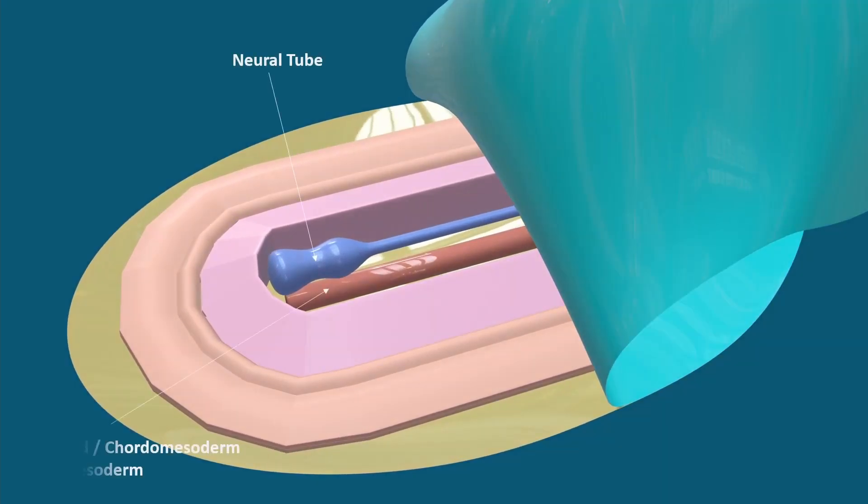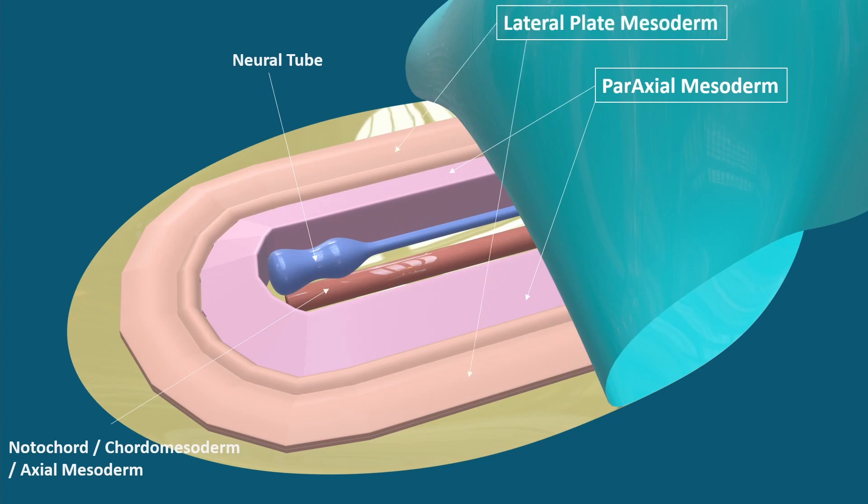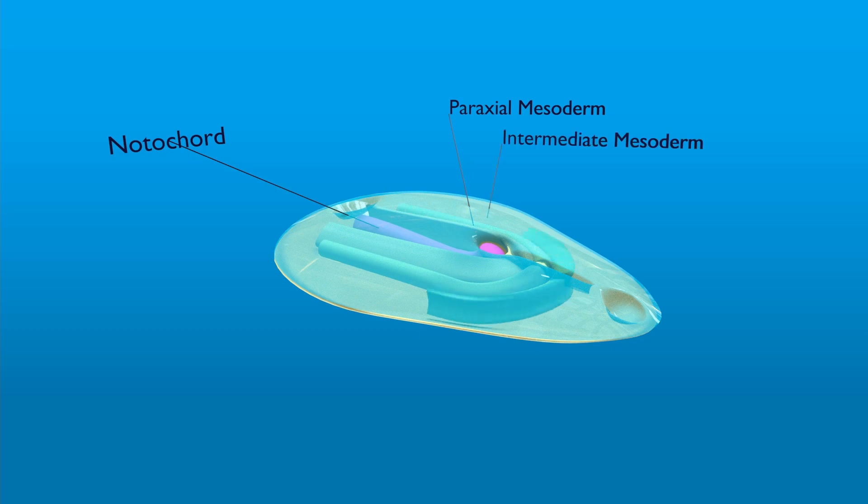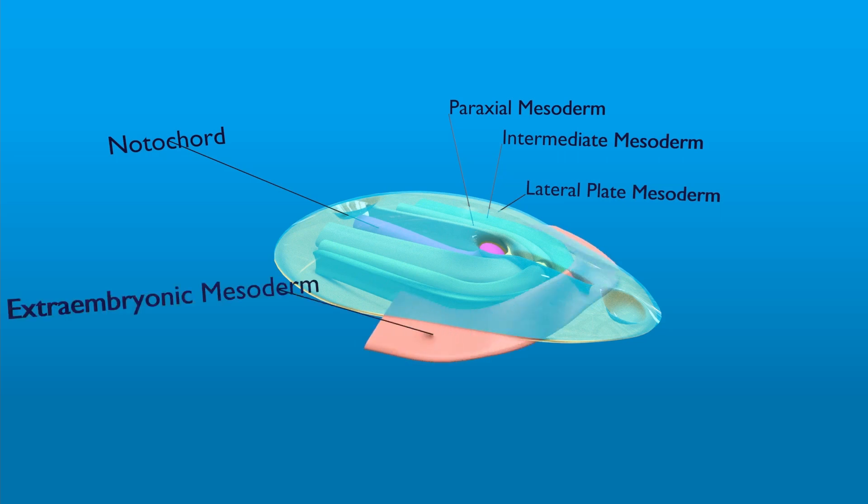At the mid axis of the embryo is the axial mesoderm also called notochord. The part of mesoderm that runs just parallel and lateral to this axial mesoderm is called paraxial mesoderm. The most lateral one is the lateral plate mesoderm and in between the lateral plate and paraxial mesoderm is the intermediate mesoderm. Cells that ingress from the Henson's node form the precordal plate and notochord. Cells that ingress from the cranial end of primitive streak form the paraxial mesoderm. Cells from the mid streak form the intermediate mesoderm. Cells from the caudal part of streak form the lateral plate mesoderm and cells from the caudal end contribute towards the extraembryonic mesoderm.